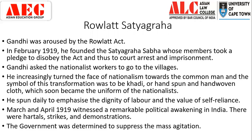The next movement — the Rowlatt Satyagraha — is one of the most crucial and one of the turning points of Gandhian ideology and the Gandhian movement. The Rowlatt Act was passed, and according to this act, any Indian could be arrested on mere suspicion and put behind bars without any trial. This gave the police enormous power to arrest anybody on the slightest doubt. In February 1919, Gandhi decided he was going to fight against this Rowlatt Act. He founded a Satyagraha Sabha whose members took a pledge to disobey the act — they would court arrest and imprisonment rather than comply.